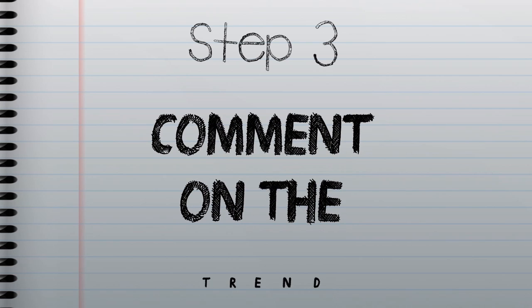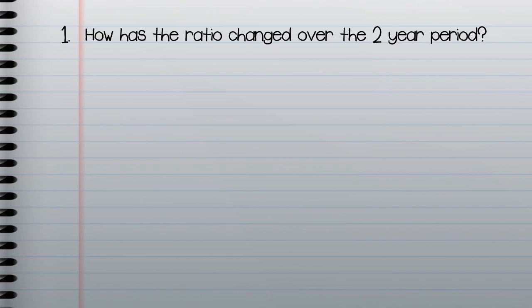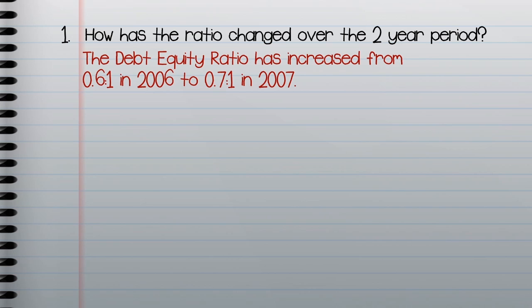The first comment should address what happened — did the number go up or down? As you can see on the screen, the debt equity ratio has increased from 0.6:1 in 2006 to 0.7:1 in 2007.